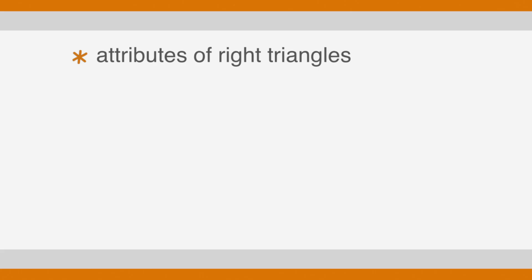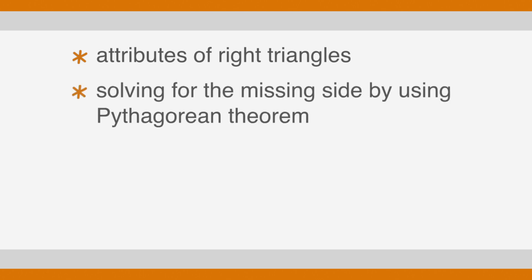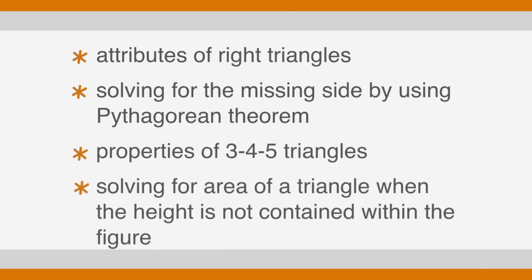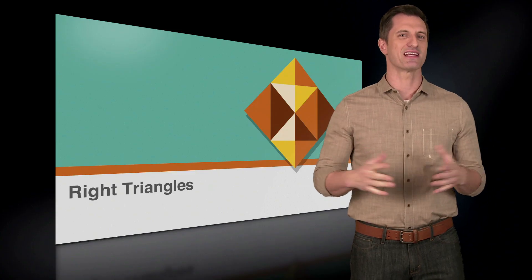In this lesson we learned about the attributes of right triangles, solving for the missing side by using the Pythagorean theorem, the properties of 3-4-5 triangles, and solving for the area of a triangle when the height is not contained within the figure. Now let's put this lesson to the test with a pause and solve.